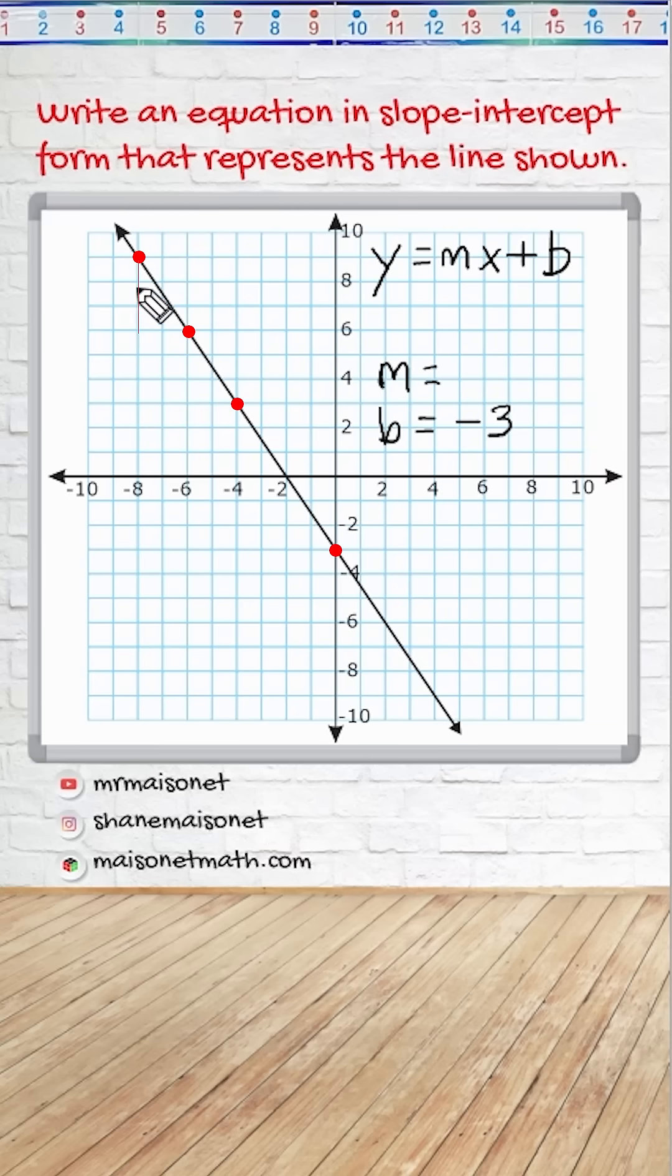So from this point to our next point, we would drop 3, and then we have a run of positive 2. We can see that we're going down 3 and over 2, which means our slope is negative 3 over 2.